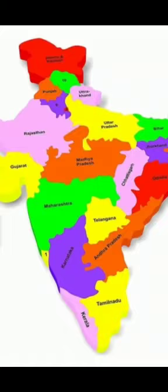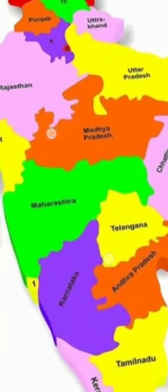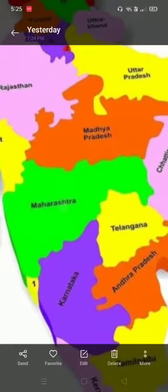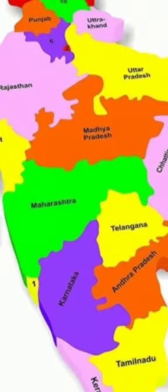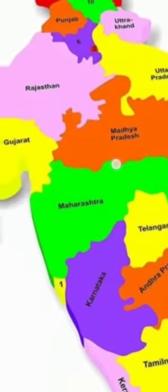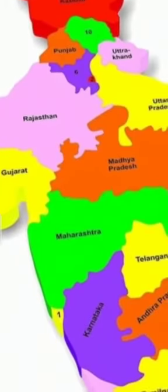Here you can see the Maharashtra state. Maharashtra is located in the Western part of India. It borders the states of Gujarat, Madhya Pradesh, Goa, and Telangana.